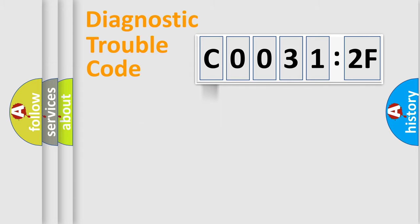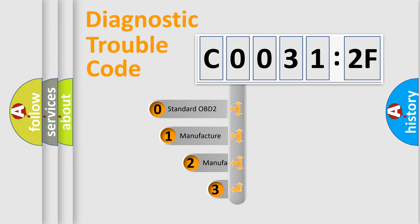Powertrain, body, chassis, network. This distribution is defined in the first character code.